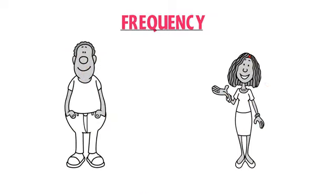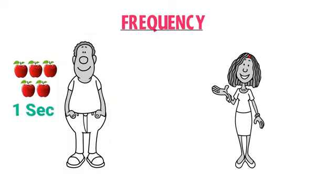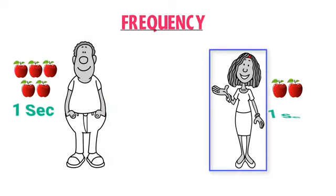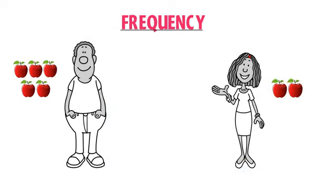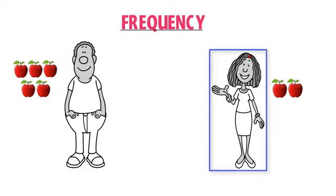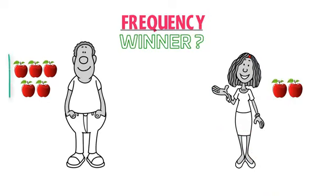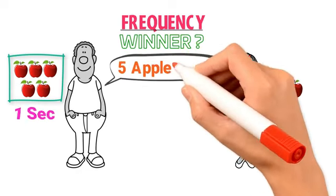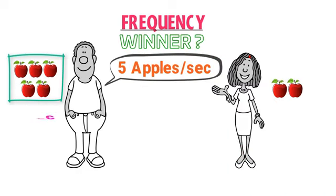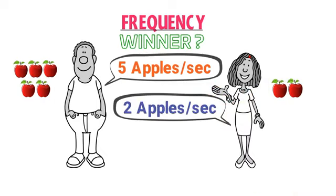Let's consider John and Uzma. John can eat five apples in one second, while Uzma can eat only two apples in one second. We can write: John eats five apples per second, while Uzma eats two apples per second.